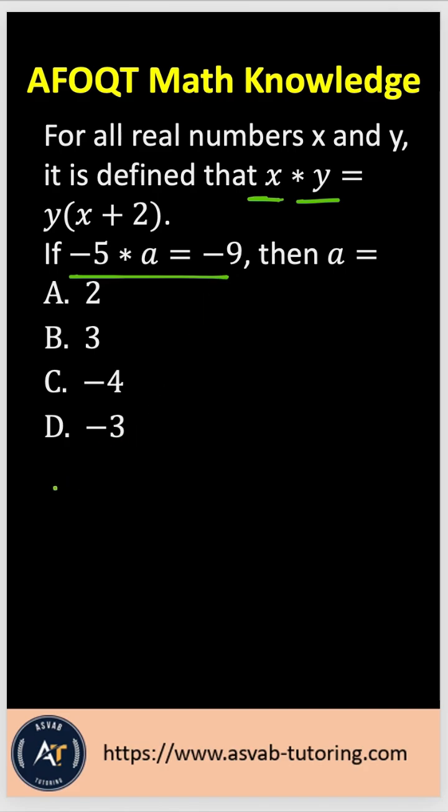So that gives you a, that is the second one, a times, that means parenthesis, first one so negative 5 plus 2 equals negative 9.